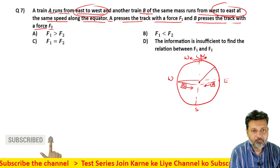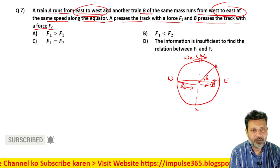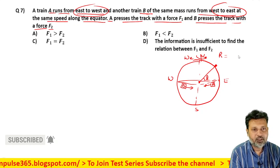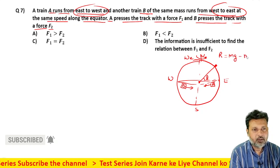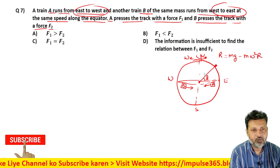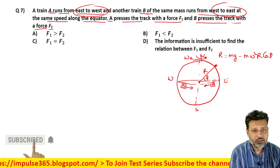Generally, we have studied this from the gravitation chapter. If there's an object here at angle theta, the normal reaction value is: N = mg - mω²r cos(θ).